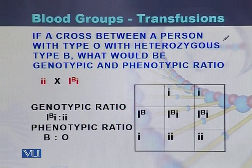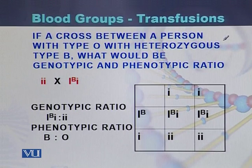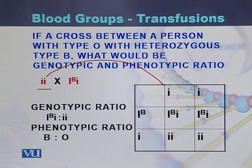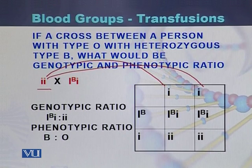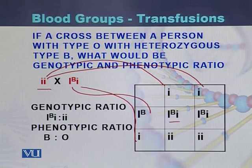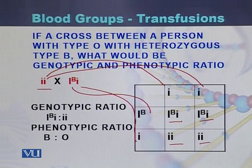In the second example, a person with blood group O (genotype II) marries a person who is heterozygous for blood group B (genotype I^B I). The Punnett square cross produces genotypes I^B I and II. The genotypic ratio is 1:1, and the phenotypic ratio is also 1:1 — two offspring with blood group B and two with blood group O.